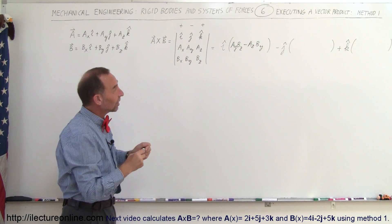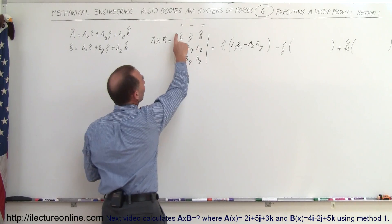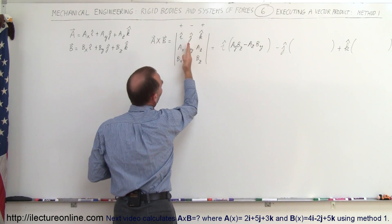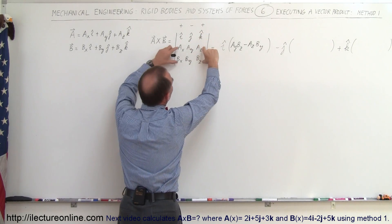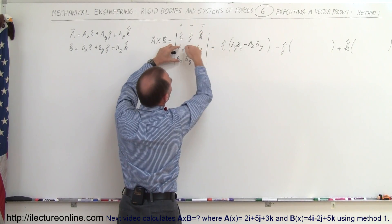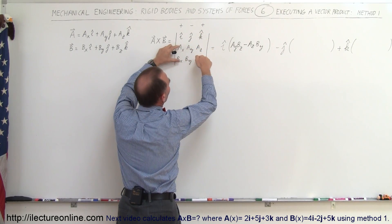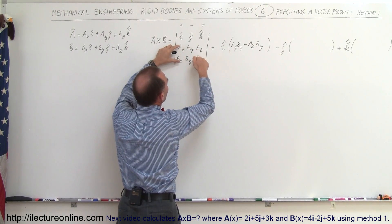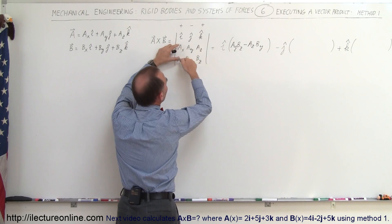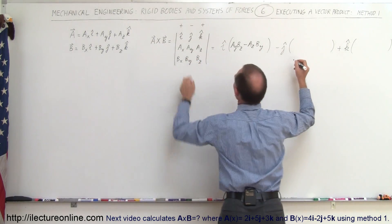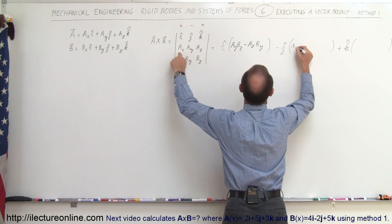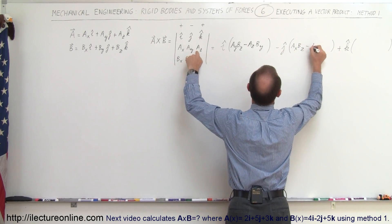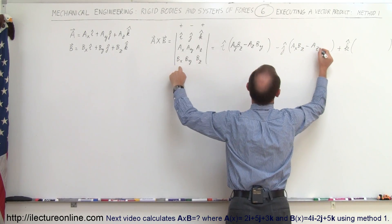So now we take our second unit vector, minus j. Remember the signs alternate, so now it's minus j. Cross out this column, cross out this row, now you end up with those four elements. So again, you multiply this element times this element and then subtract when you multiply this element times this element. So this becomes Ax times Bz minus Az times Bx.